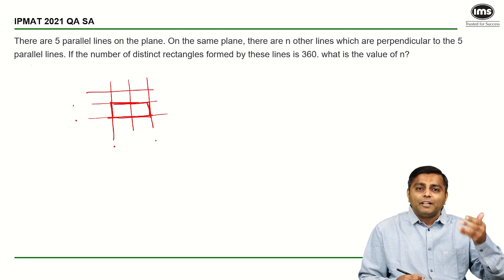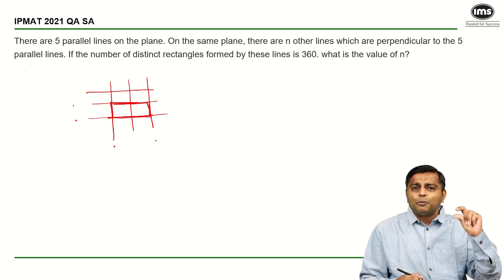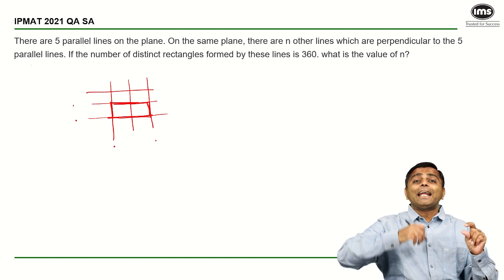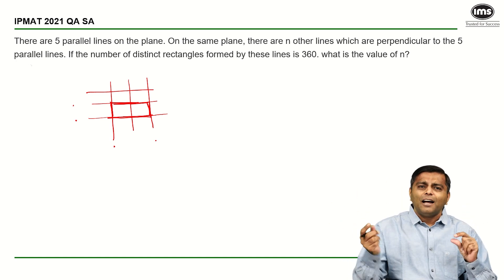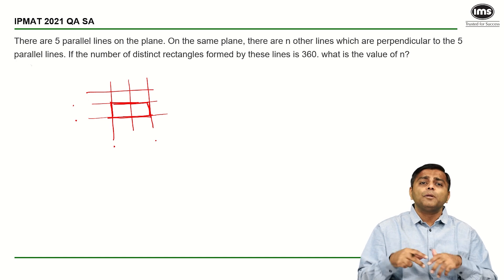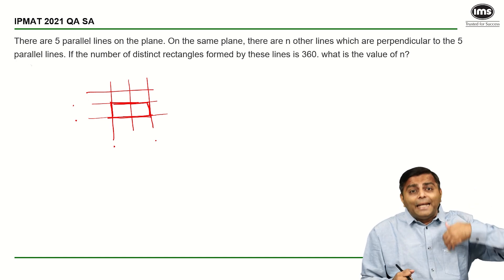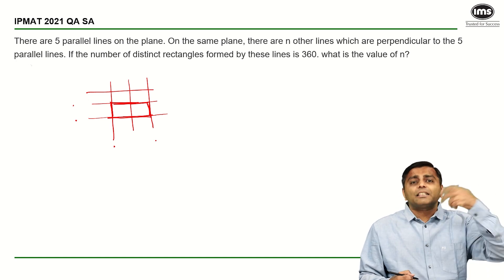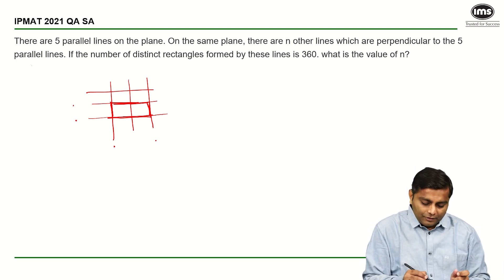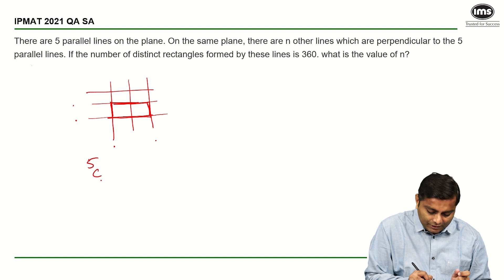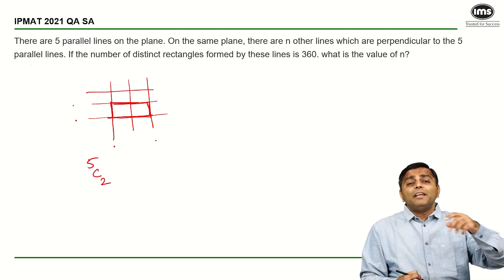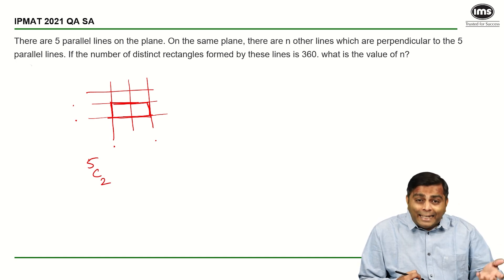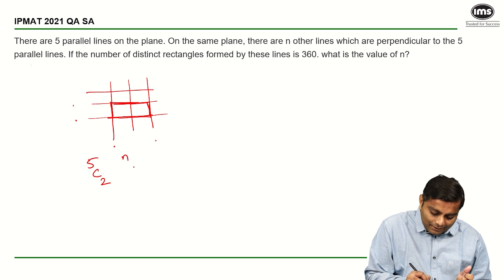That is about it, which means if there are five horizontal lines, you need to pick out any two lines out of that and there are N vertical lines. Again, you need to pick out any two and you should be able to get a rectangle. How many such rectangles can be formed is the counting. How many ways can we pick out two out of five? It is as simple as saying 5C2. How many ways can we pick out two lines out of N lines? It is as good as saying NC2.